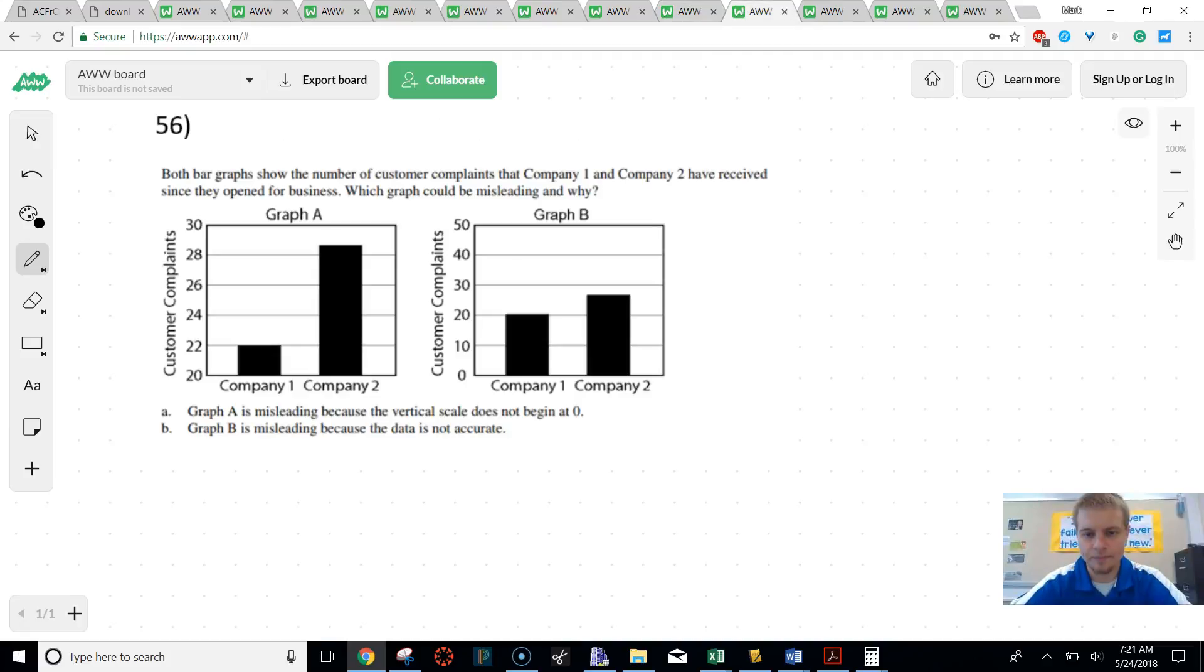Let's try the next one. It says, both bar graphs show the number of customers' complaints that company one and company two have received since they've opened for business. Which graph could be misleading? Why? A is misleading because it does not start at zero. B is misleading because it's not accurate. Well, it's not true that B is not accurate because it literally is the same graph as A. The only difference is A doesn't start at zero. So it looks like company two receives a lot more complaints than company one, even though it's actually this. That's what it is. It's 22 and 29. So this one just received seven more complaints. So it's definitely misleading because it doesn't start at zero. The other kind of misleading thing that you generally get is the pie graphs not adding up.